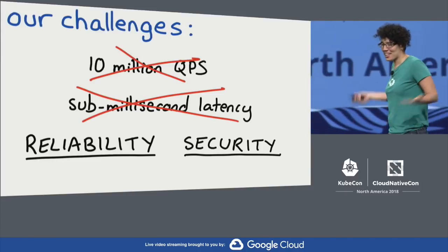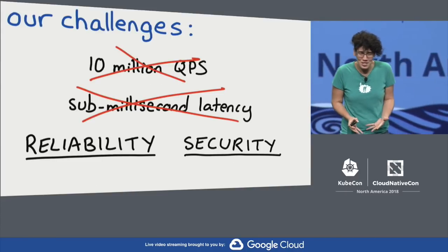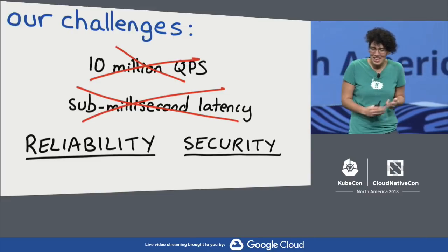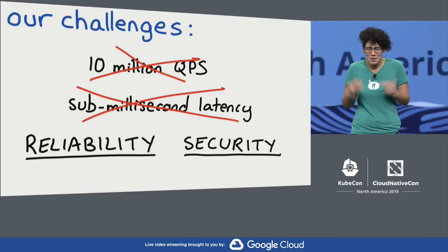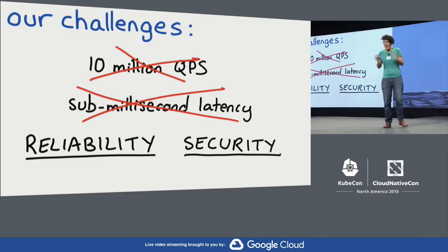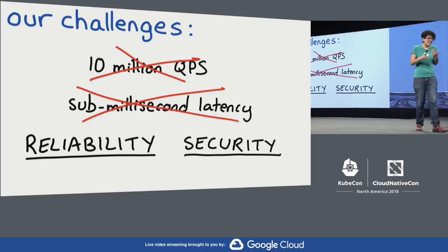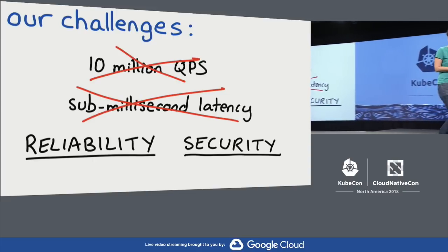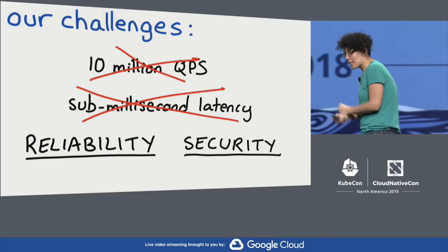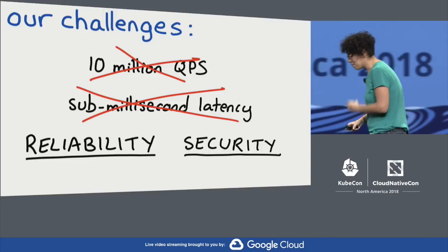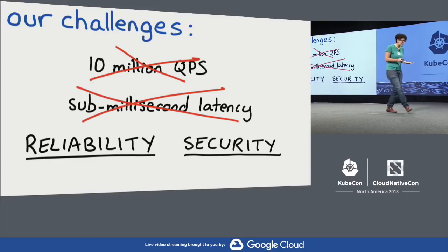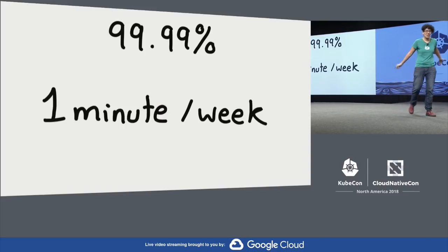What does that mean about our priorities and challenges in infrastructure? We do not process 10 bajillion queries per second. We don't need to return results in 20 milliseconds. What we care about in infrastructure is reliability, and we care about security. I could have written this whole talk about security in Kubernetes, but it's going to be about reliability.